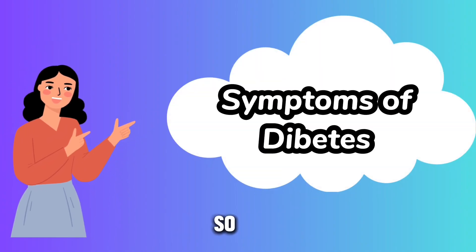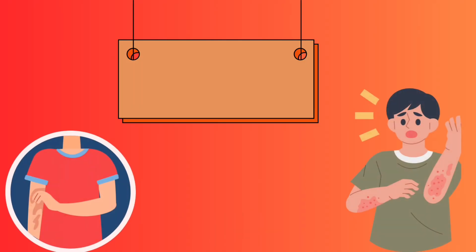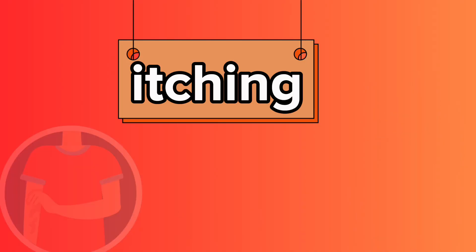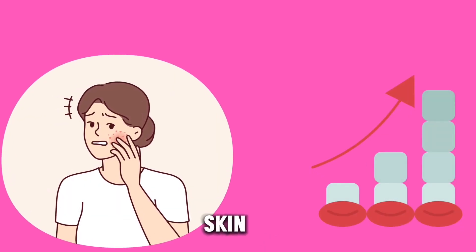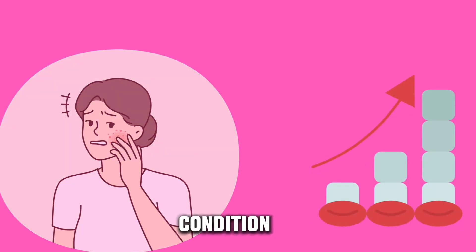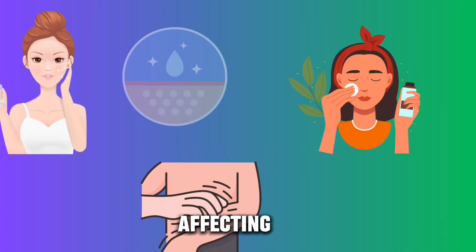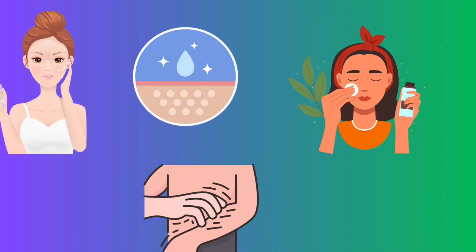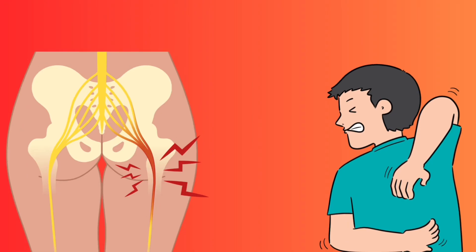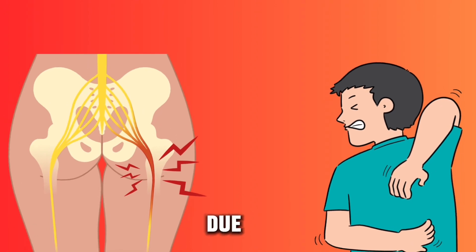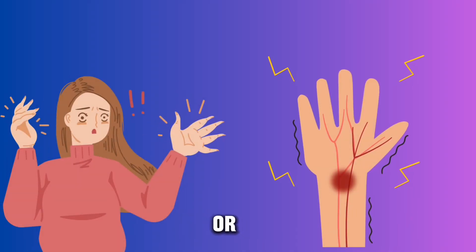So let's talk about the symptoms of diabetes. Number one: itching. Itching can be a symptom of diabetes, often associated with dry skin caused by the condition. High blood sugar levels can lead to dehydration, affecting skin moisture and causing dryness, which in turn can cause itching. Additionally, nerve damage due to diabetes can also lead to itching, tingling, or burning sensations in different parts of the body.